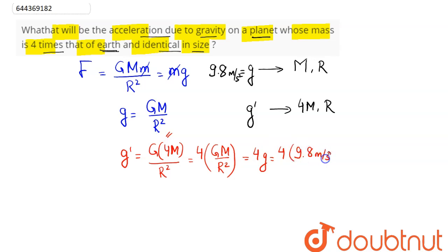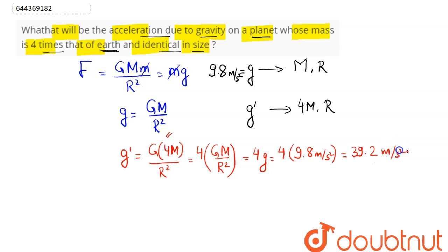...this gives us 4 times g, which is 4 times 9.8 m/s². So the acceleration due to gravity will be four times that on Earth, which simplifies to 39.2 m/s².